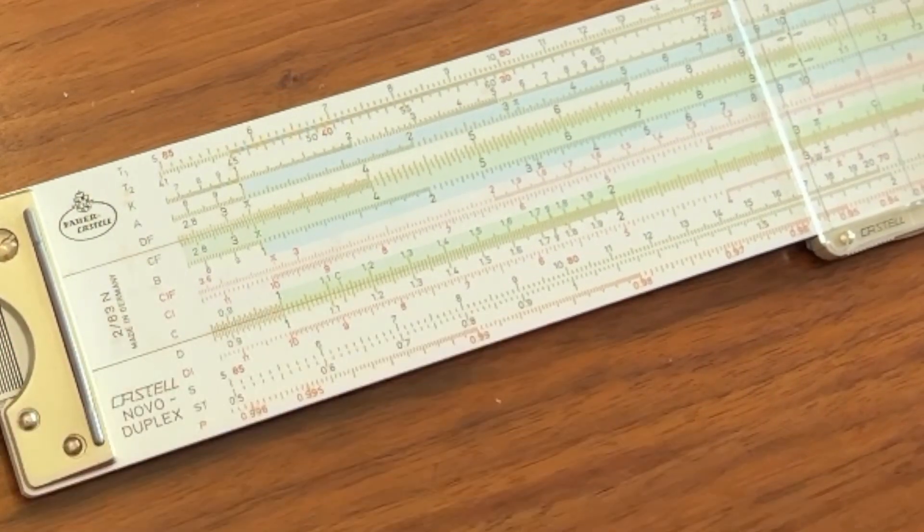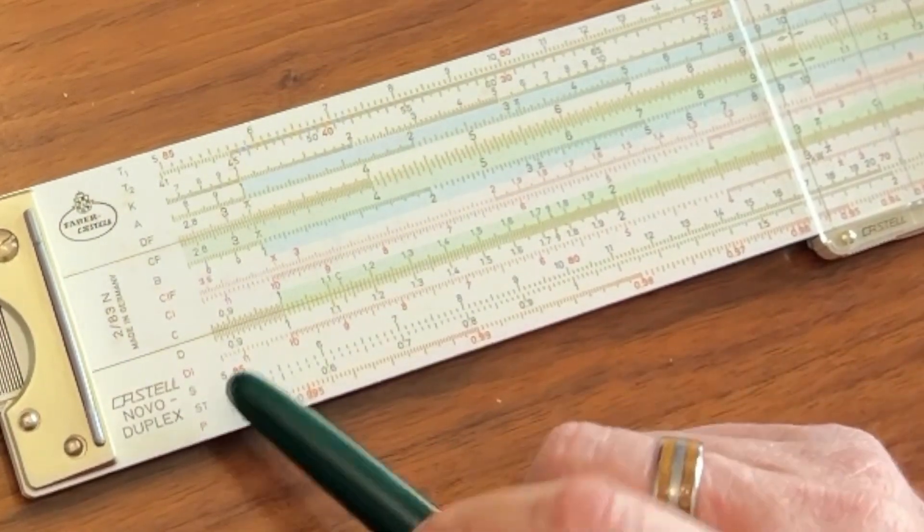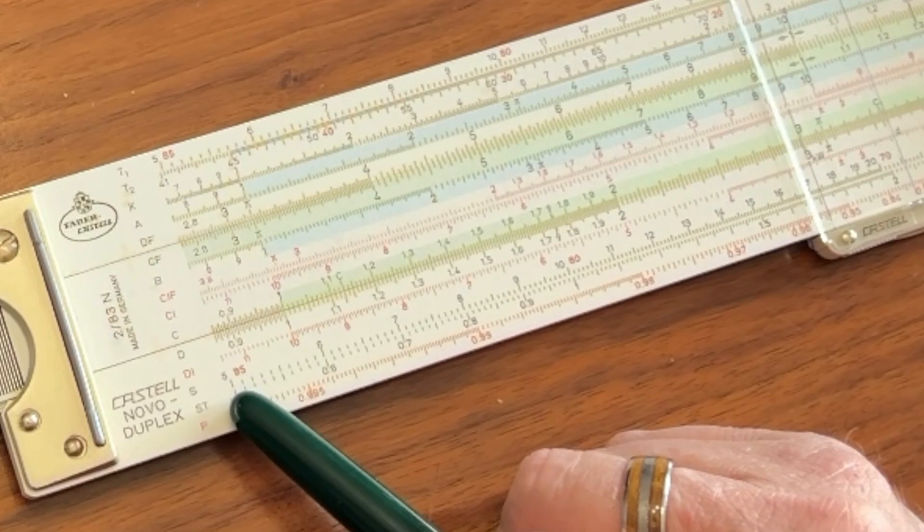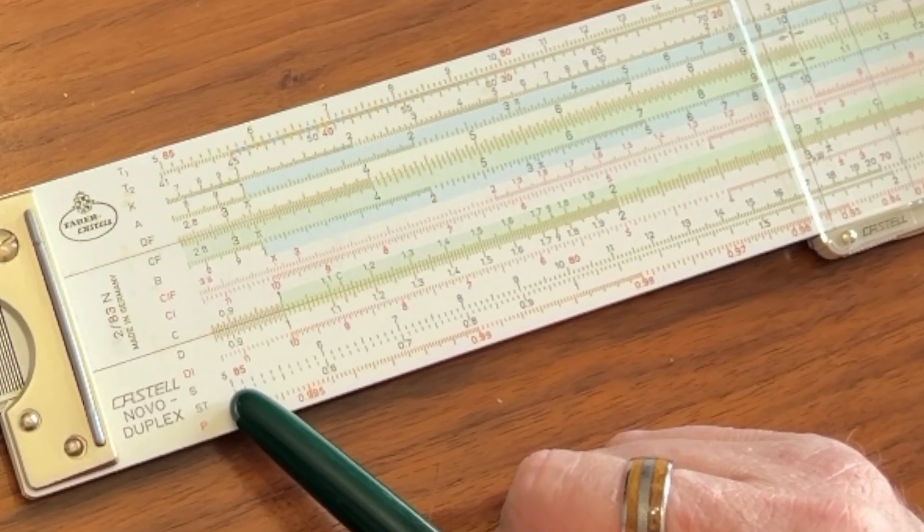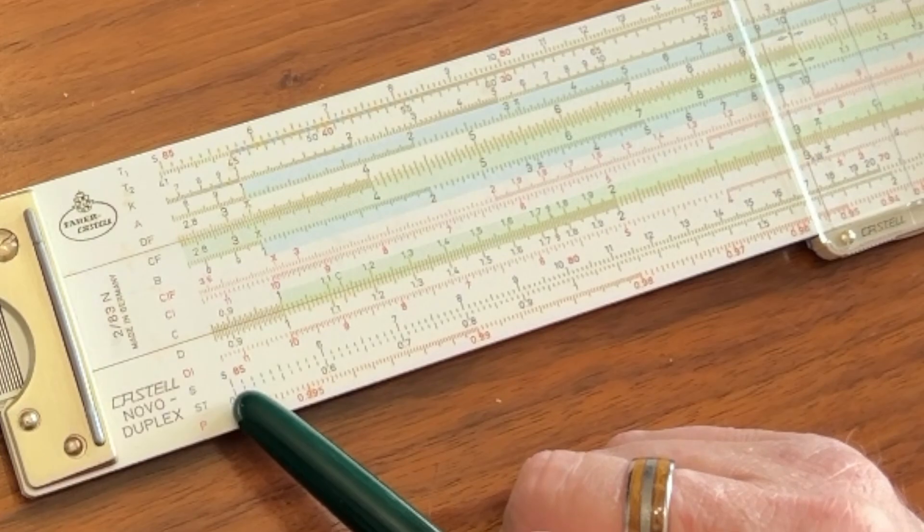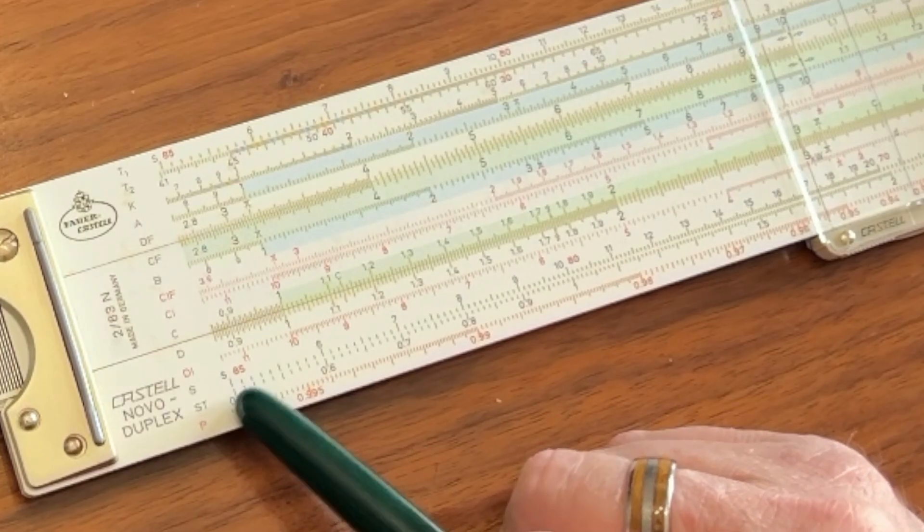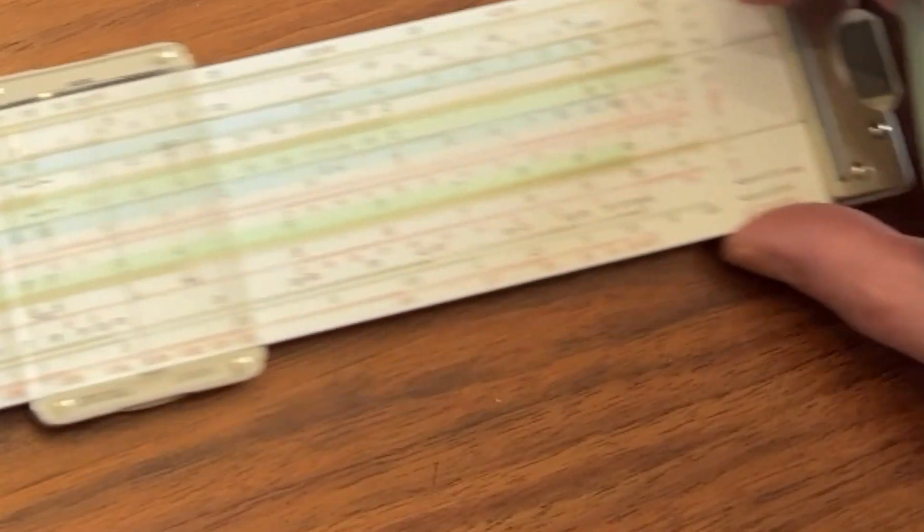So let's start off with a very familiar one here, and that is the sine scale. But one thing I want you to notice is that there is a minimum value to the angle on the sine scale, and that minimum value is 5.7 degrees. There's also a maximum value.